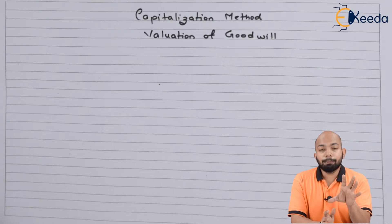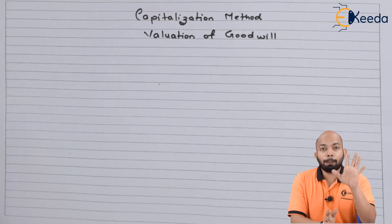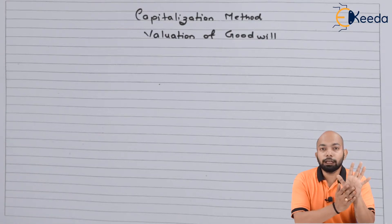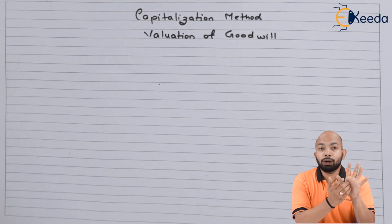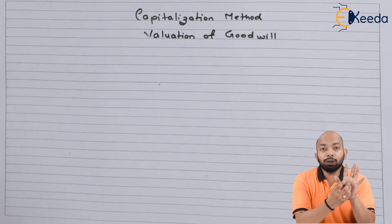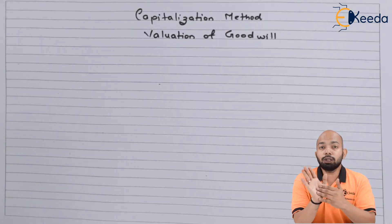This is the major important factor whenever you deal with the capitalization method. Part A is the normal value of the business, which is derived by capital employed multiplied by the normal rate of return. All these figures will be provided in the question. This is Part A.